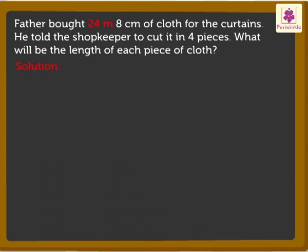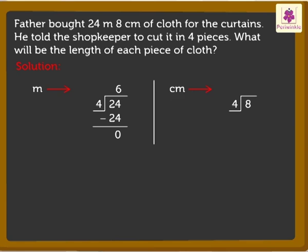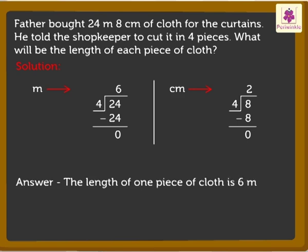Here, too, we divide 24 meters 8 centimeters by 4 to get the answer like this. With this, we found the answer. The quotient is 6 meters 2 centimeters. Thus, the length of one piece of cloth is 6 meters 2 centimeters.